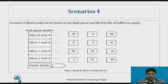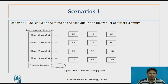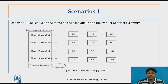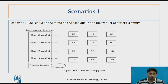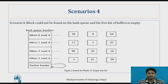In scenario 4, the block could not be found on the hash queue and the free list of buffers is empty. When a particular process is searching for any block and that block is not found on the hash queue, the expected action is to allocate the buffer from the free list. But in scenario 4, that block is not available on the hash queue, and to continue its task we need to allocate the buffer from the free list, but the free list is empty — the free list header at the bottom has no free buffer.